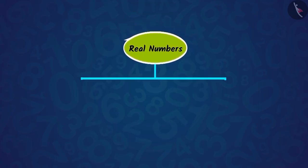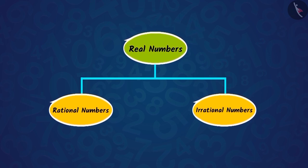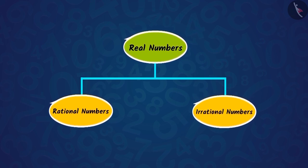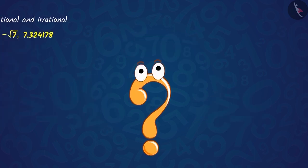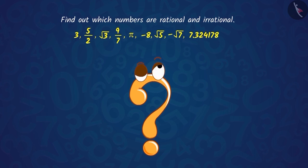You all know that real numbers are made up of rational and irrational numbers. Dear children, can you sort these real numbers into rational and irrational numbers?